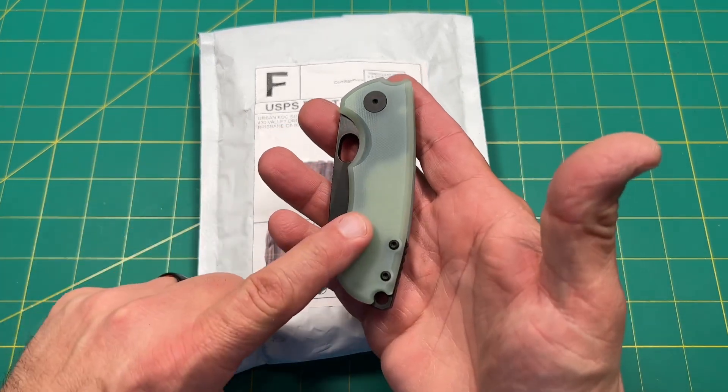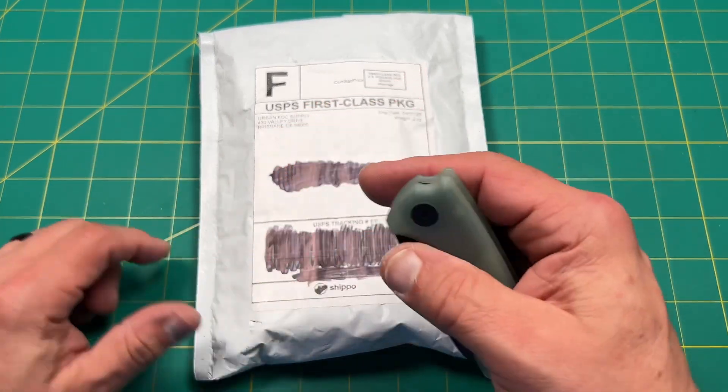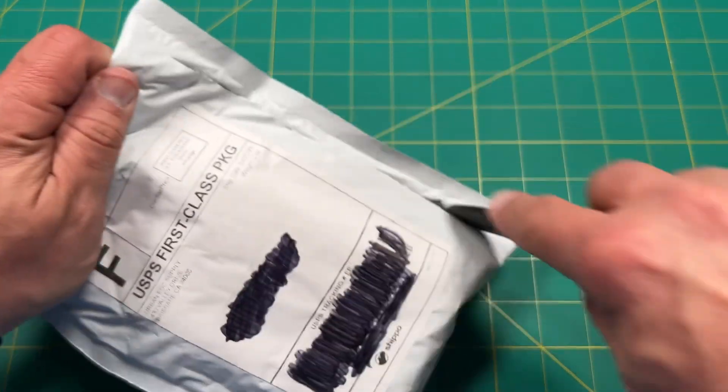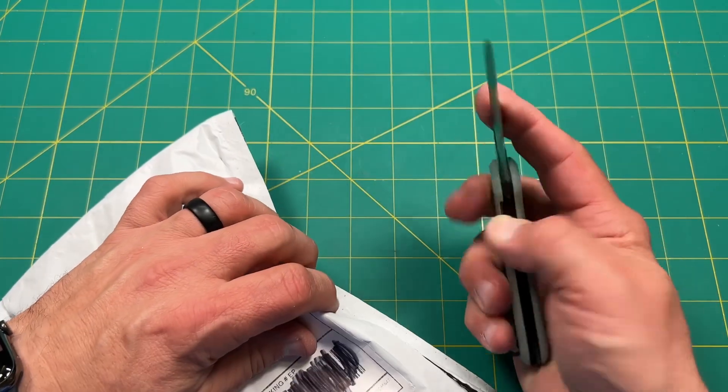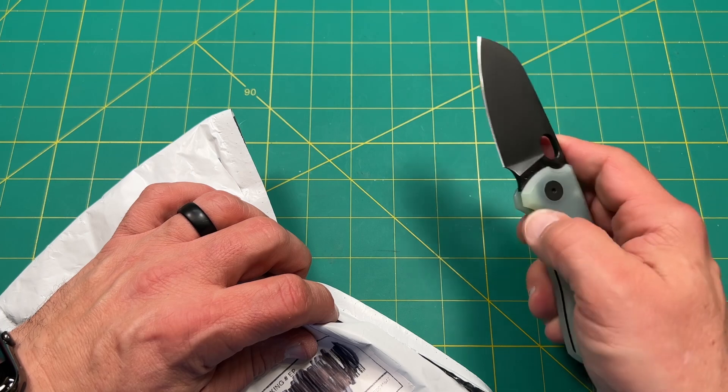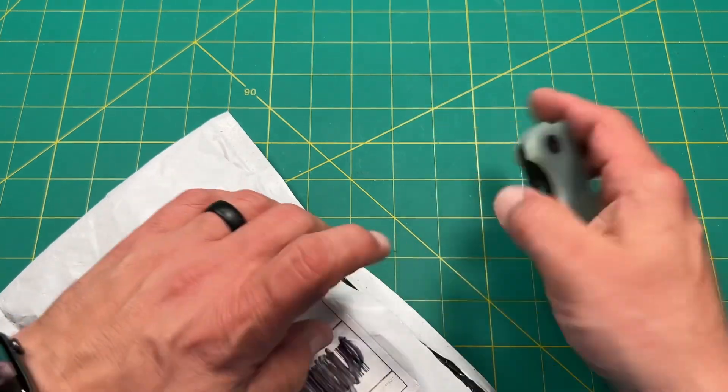Opening it today with my Urban EDC F5.5. Probably something for this, I'm going to guess. This is the JG10 version, M390 blade steel, black coated, I believe DLC or PVD, with titanium liners.